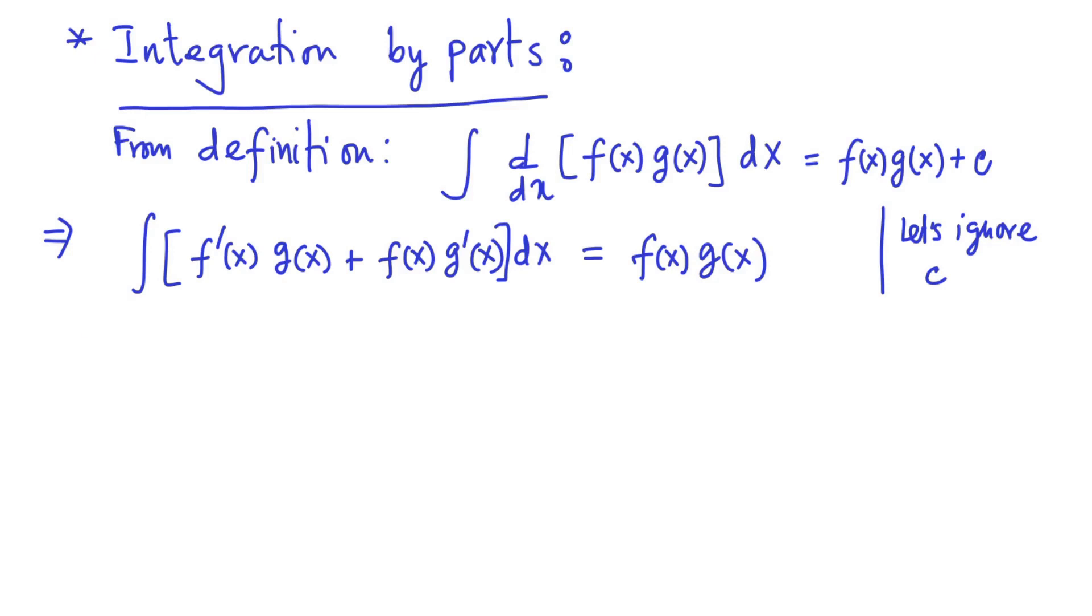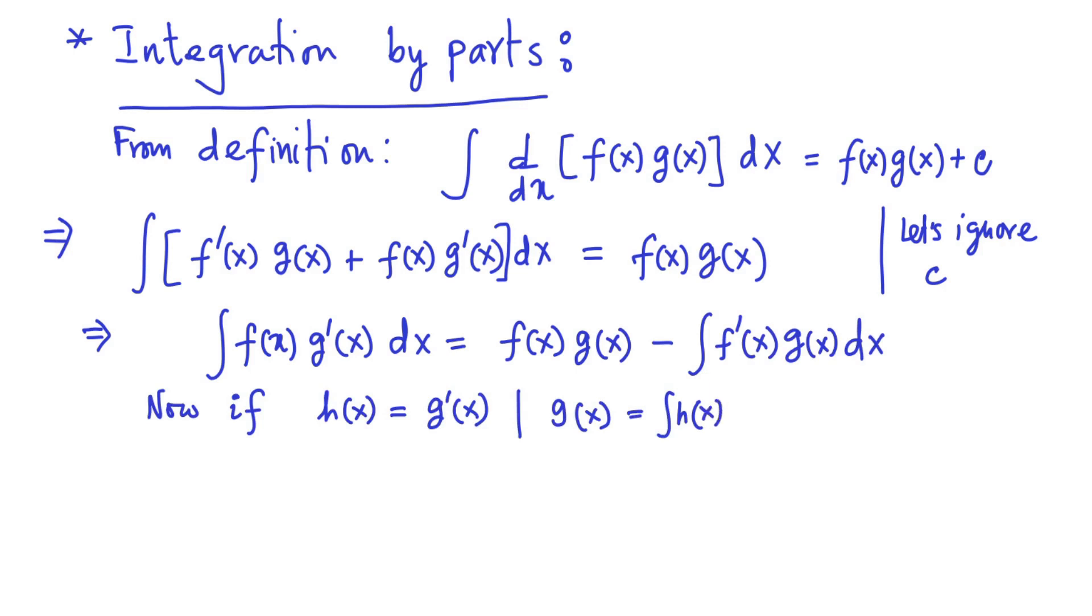By rearranging the terms, we can rewrite the indefinite integral of f(x) g prime(x) dx to be f(x) g(x) minus integral of f prime(x) g(x) dx. Now we can define another function, say h(x), which is equal to g prime(x). It also means that I can define an antiderivative as g(x) to be integral h(x) dx. Here we are ignoring the constant of integration.